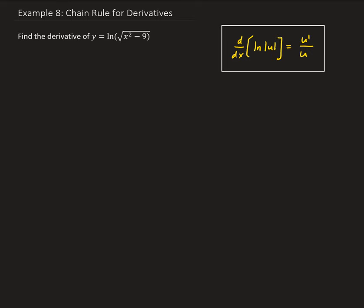Looking at our function here, we can rewrite this as y equals natural log of x squared minus 9 to the power one half.